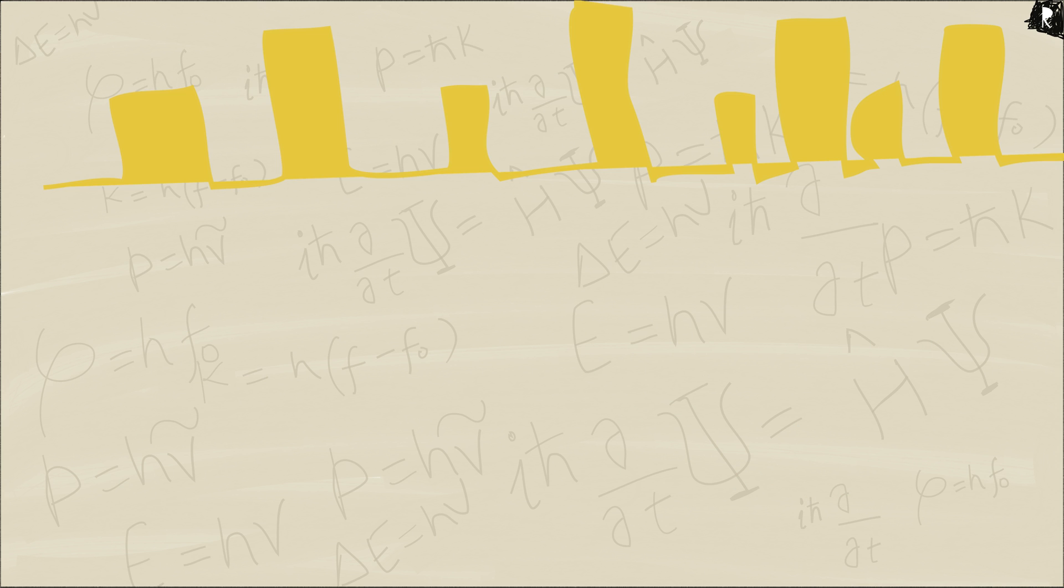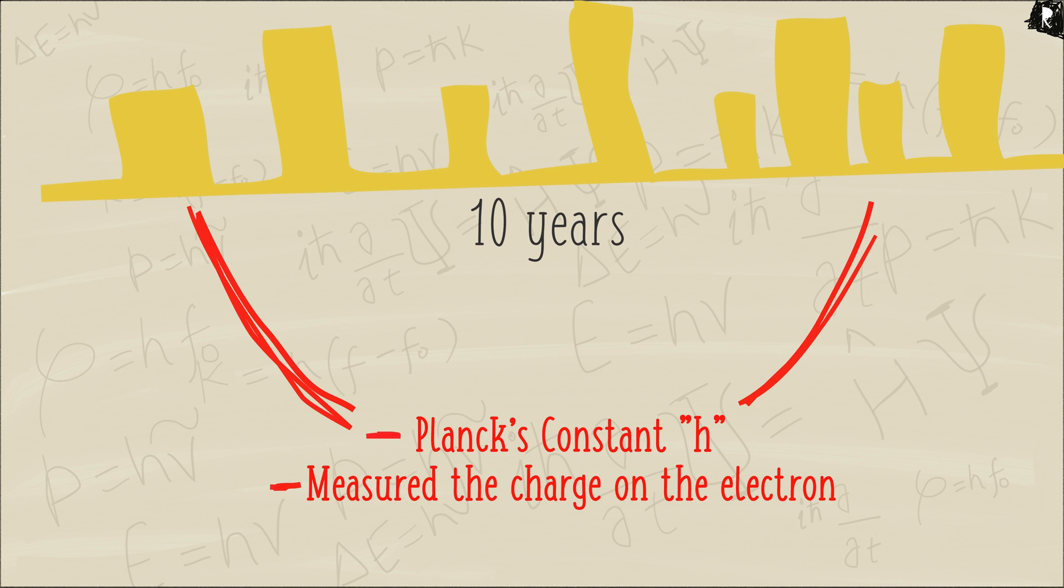in between the process of proving Einstein wrong, he derived a very accurate value of Planck's constant, H. Due to the experimental determination, he also measured the charge on the electron.